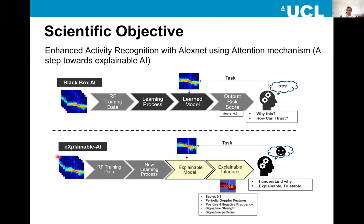In explainable AI, we have the same set of signatures as training data, go through a learning process, but this time the explainable model gives certain observations — not just a score. It will discuss whether there is a periodic pattern, whether there are positive and negative frequencies, what is the strength of the signal, what is the signature pattern, and what is the score. This is given by the network in the form of an explainable interface, so the end user — a human — would be able to trust it more.